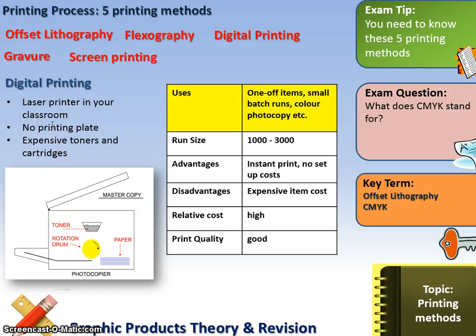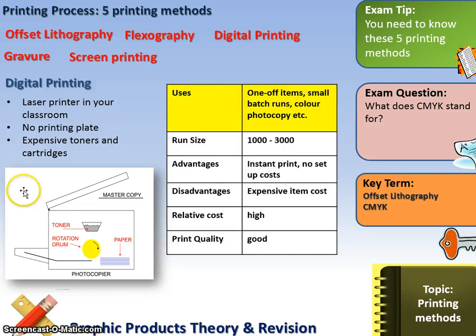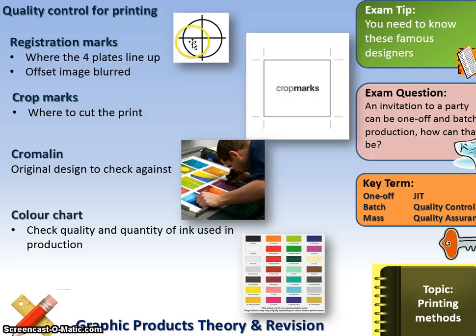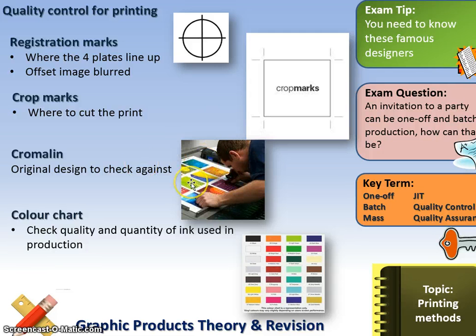Digital printing is used in schools — typically a laser printer with toner, which can be very expensive due to the cost of toner cartridges, though print quality is very good. Registration marks are the circles with a cross through them, showing where the cyan, magenta, yellow, and black plates line up — if offset, you get a blurred image. Crop marks show where to cut. Chromalin is the original design given by the graphic designer to the printer to check against, containing the original artwork, colours, and a colour chart.